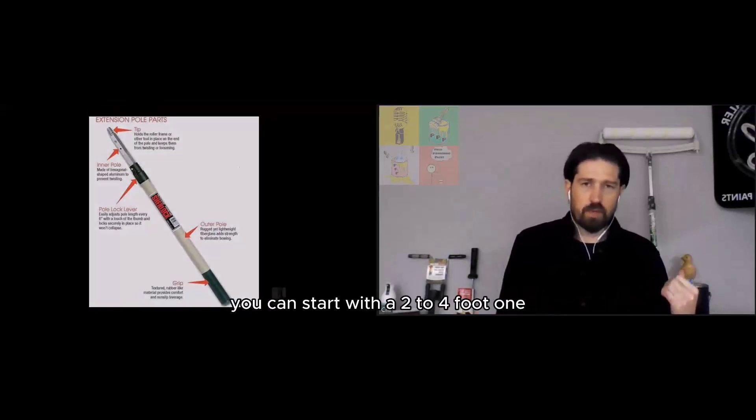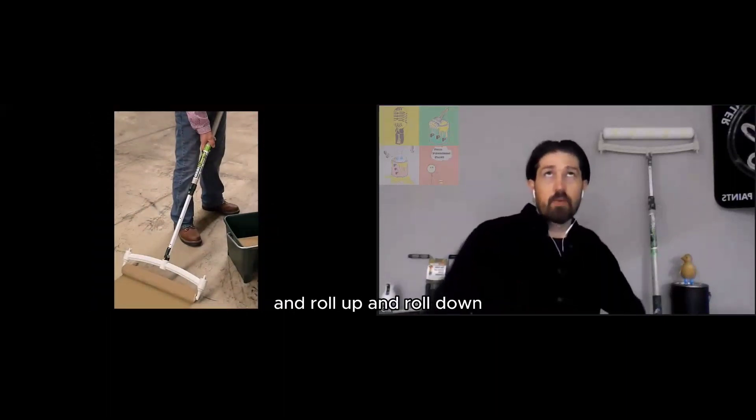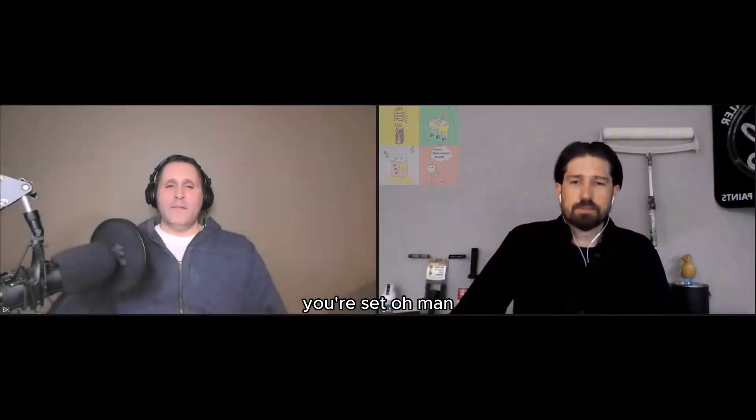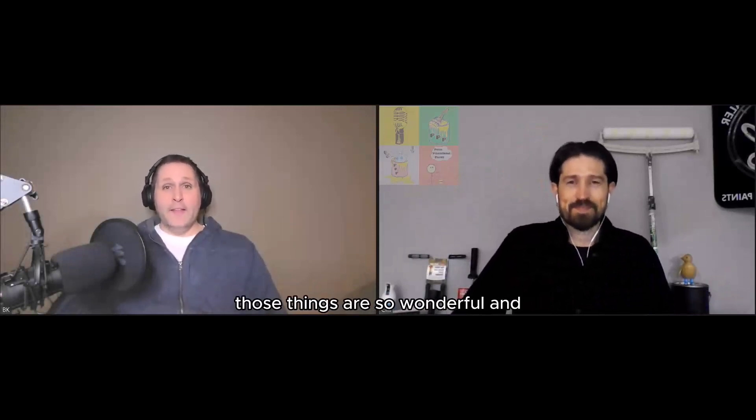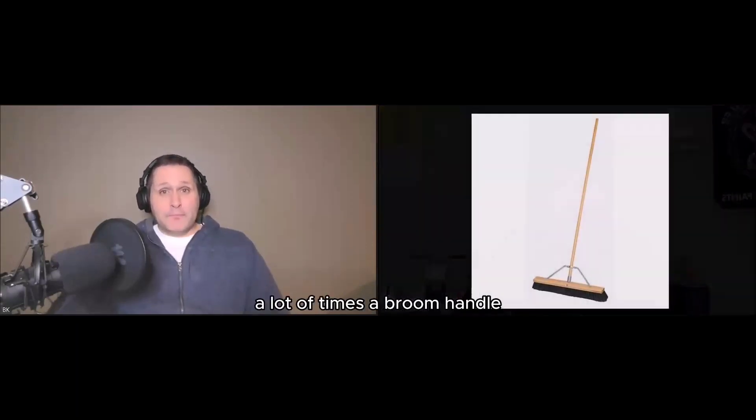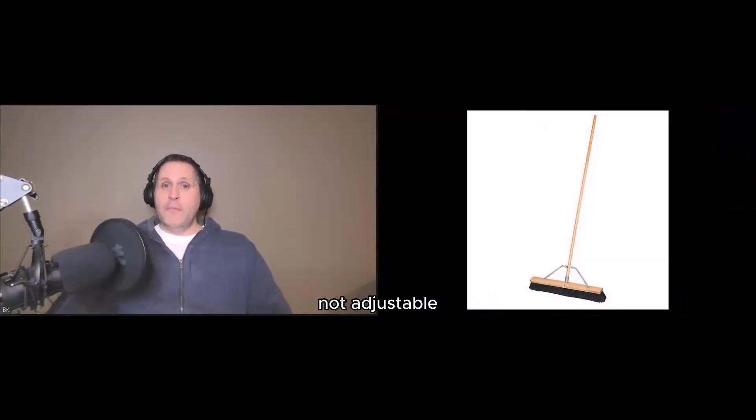You can start with a 2- to 4-foot one. You can reach down, dip a bucket, and roll up and down on a 14-inch frame. Those things are so wonderful. And like we've talked about before, if you can't quite afford an extension pole at this time, a broom handle works—not adjustable, but it still works.